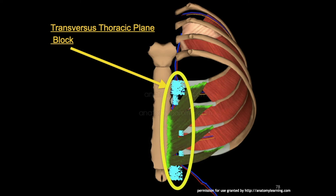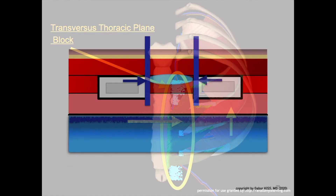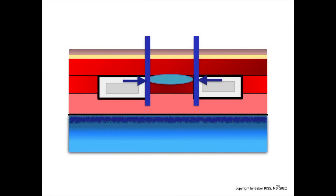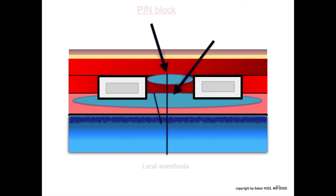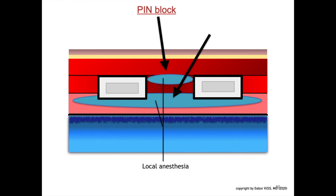As seen here on the slide, in a TTP block the spread of local anesthetics is between the internal intercostal muscle and the transverse thoracic muscle, lateral along the sternum. Back to the sagittal cross-section view at about 2 cm lateral from the sternum, this cartoon summarizes the different spreads of local anesthesia in a PIN block compared to the transverse thoracic plane block.